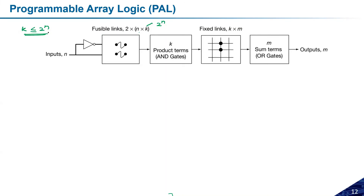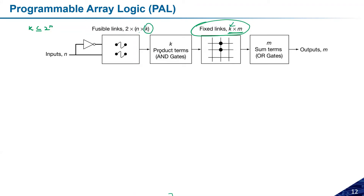So k ≤ 2^n, where n is the number of inputs. For the output (fixed) side, the number of fixed links is k×m, where k is the number of AND gates (product terms) and m is the number of outputs. This is the concept for Programmable Array Logic.